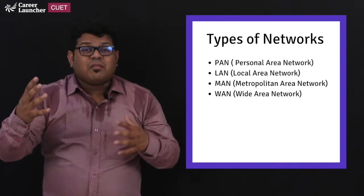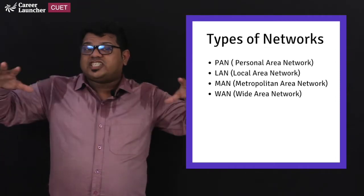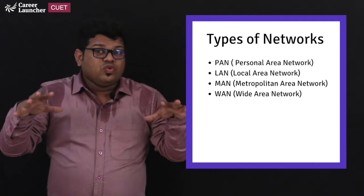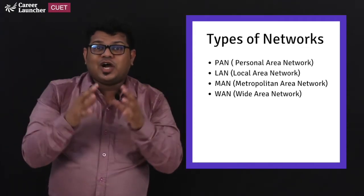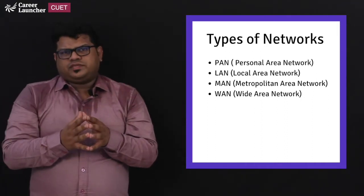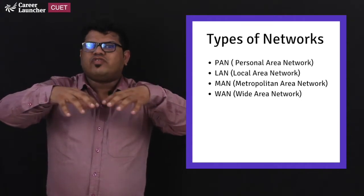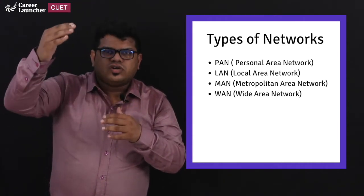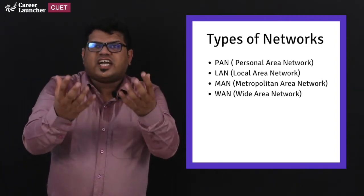And then comes metropolitan area network which is called as MAN. So any connection or communication is formed as a network in a city, a city wide. It is going to be metropolitan area network. So most probably most of the telephone lines that we could see like broadband and even mobile towers. So they form this metropolitan area network.